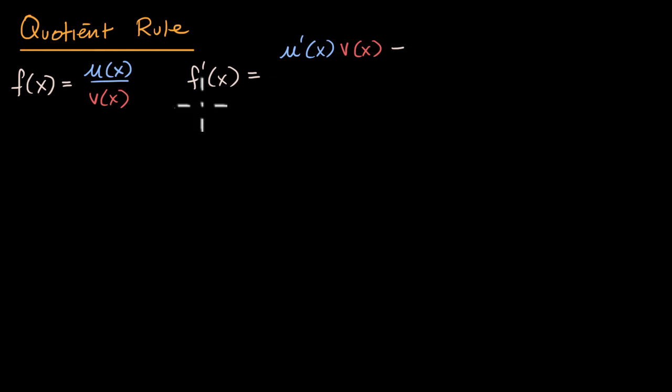minus the numerator function, u(x), times the derivative of the denominator function, v'(x). And this already looks very similar to the product rule. If this was u(x) times v(x), then this is what we would get when we took the derivative if this was a plus sign, but here it's a minus sign.